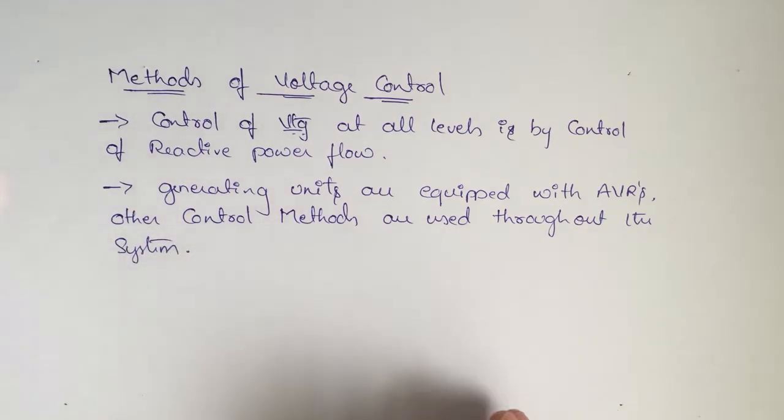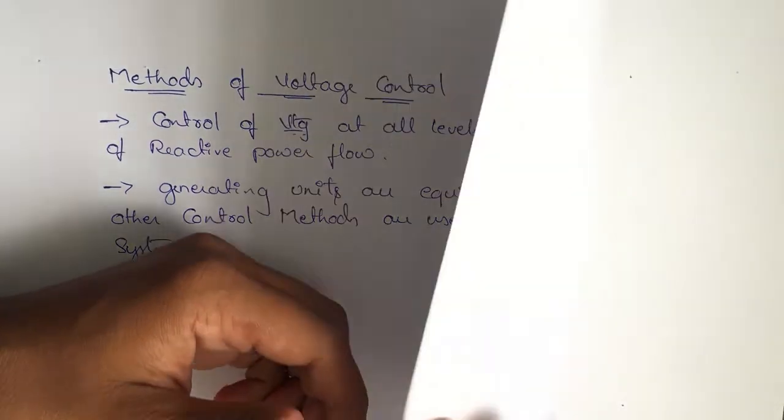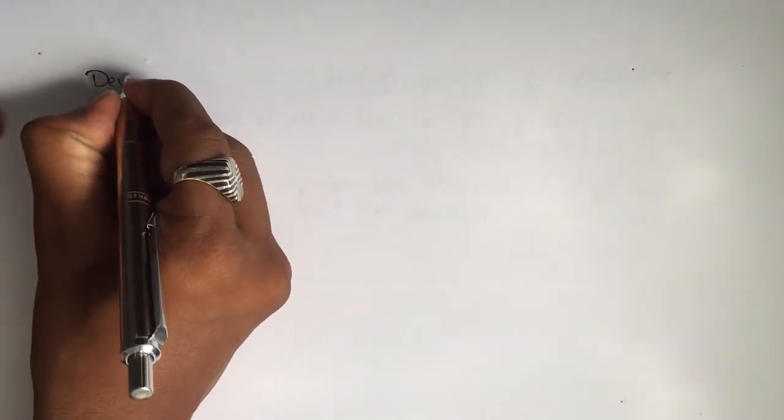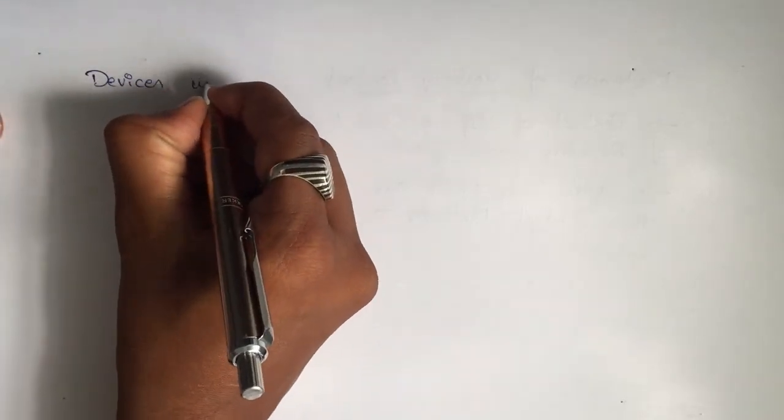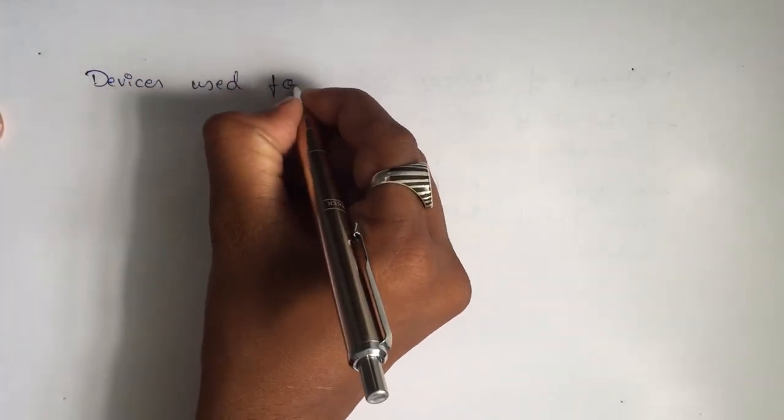Nowadays the generating units are equipped with automatic voltage regulators and also there are other control methods used from generation, transmission, and distribution. Some devices with respect to voltage control - devices used for voltage control.